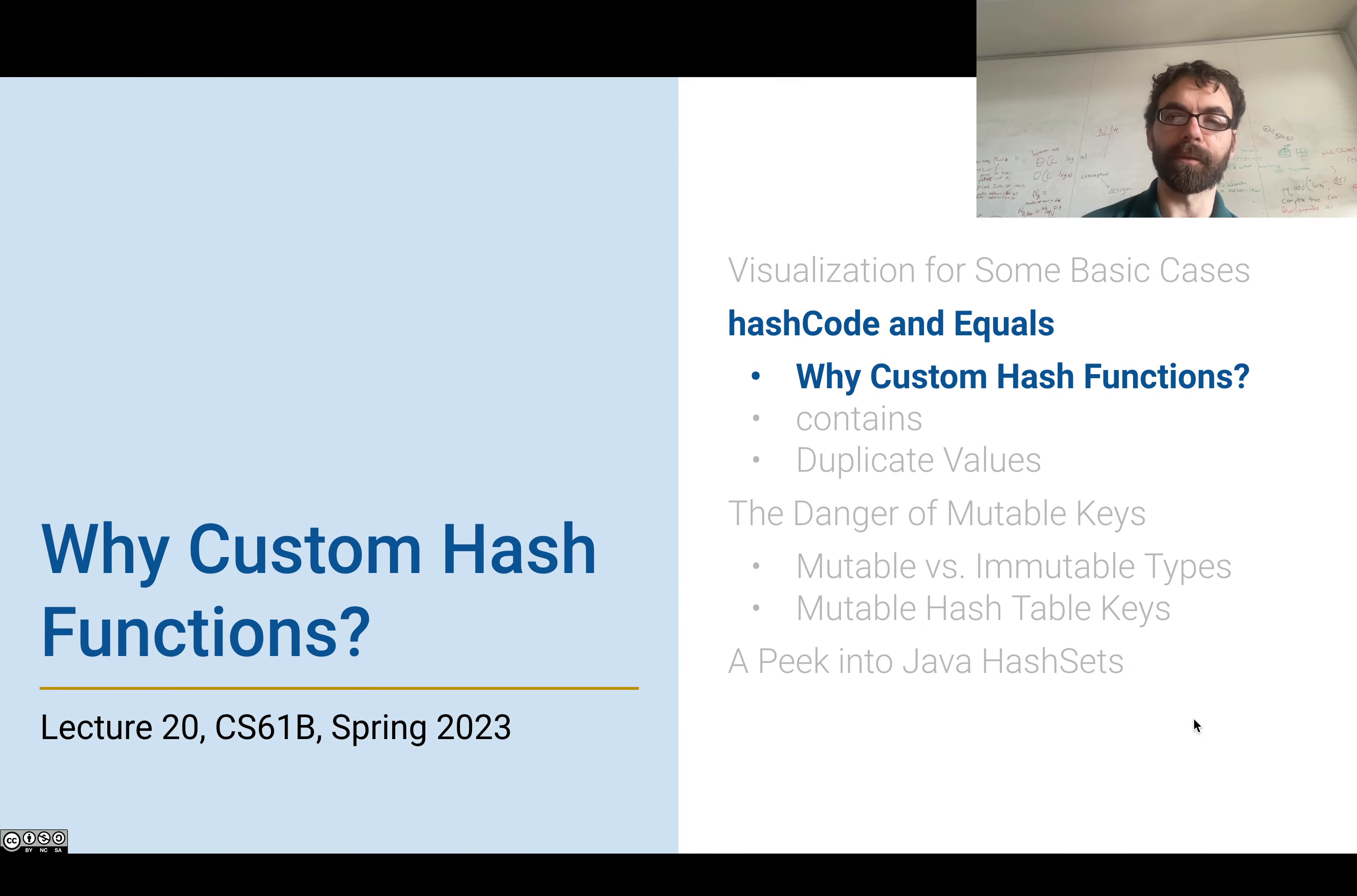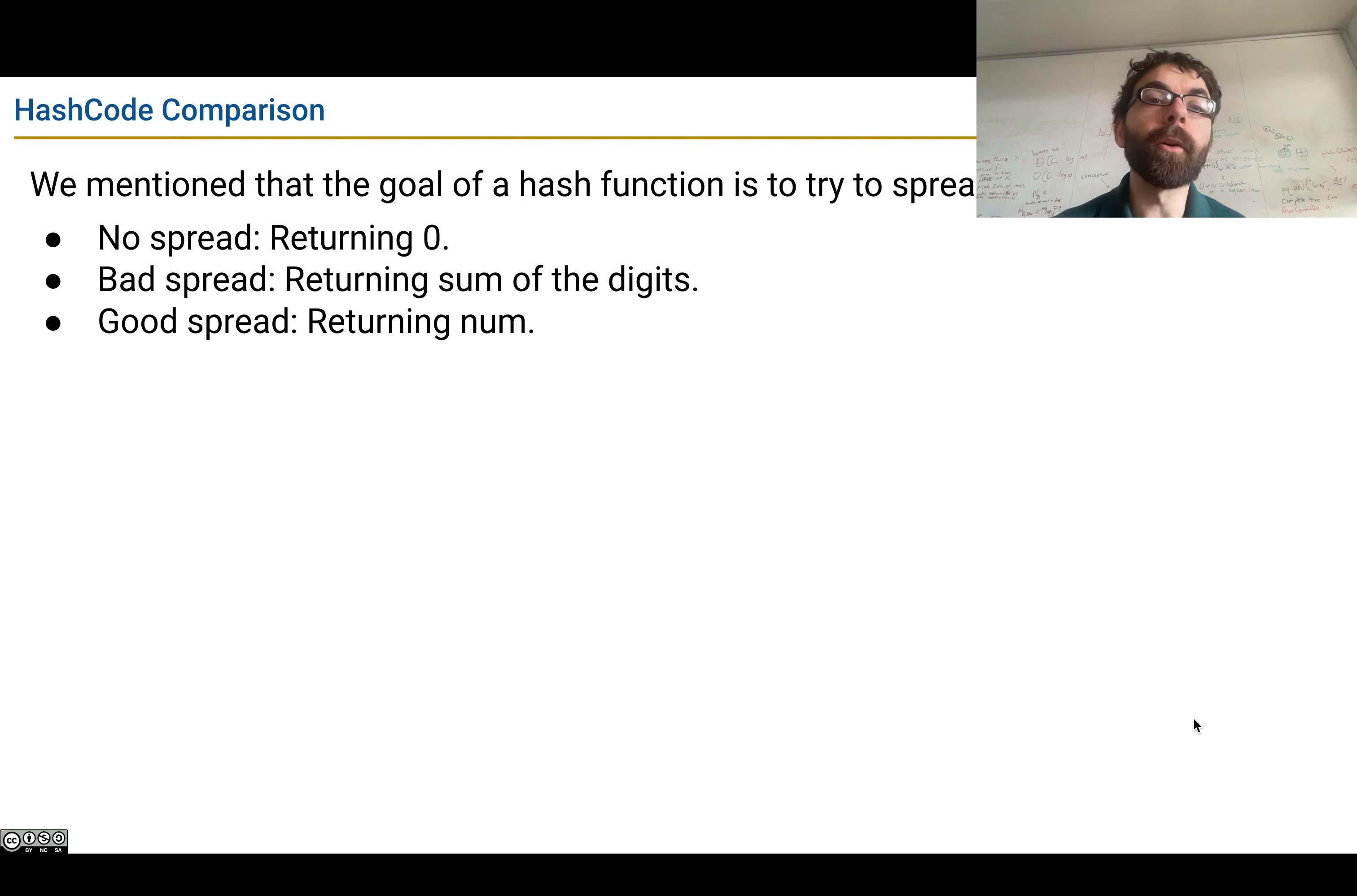Let's talk about hash functions. We mentioned that the goal of a hash function is to spread our items out evenly. For example, having the hash function only return zero would result in no spread, which is pretty bad. Everything's in one bucket. You basically just have a linked list.